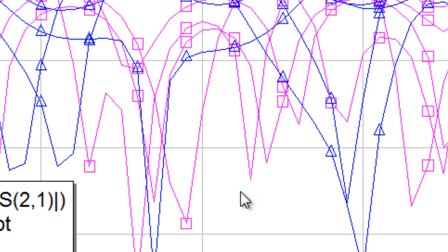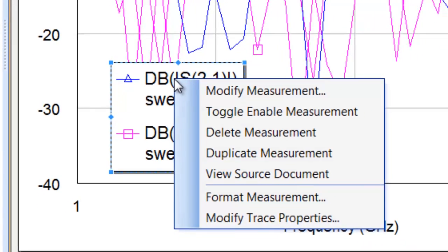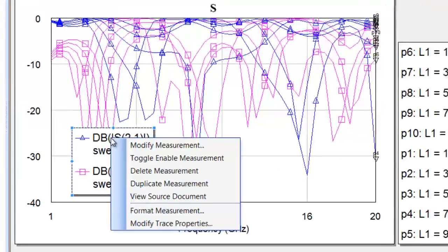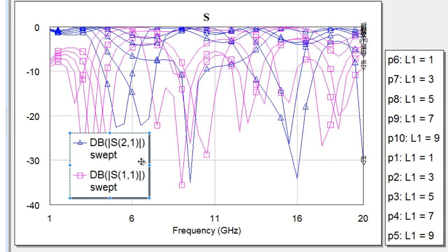Another thing we've done in graphing is if you come over to the legend of the graph where my cursor is, right-click on a measurement, there are several things that you can do now directly from the legend. We can, for example, toggle enable a measurement. I'm going to go ahead and turn that back on.